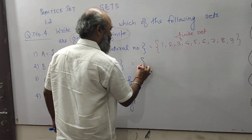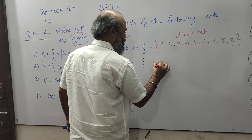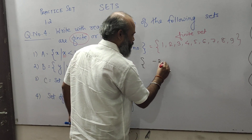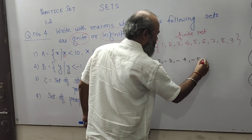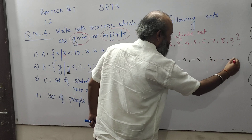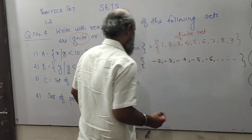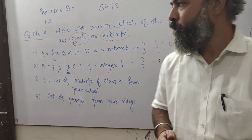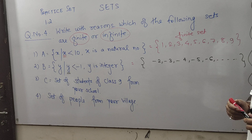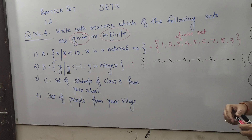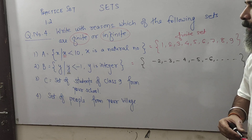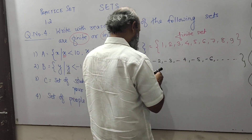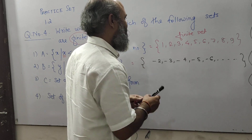We write the set as: minus 2, minus 3, minus 4, minus 5, minus 6 and so on — all numbers less than minus 1. So we say that set B is an infinite set, because the elements of set B cannot be counted.